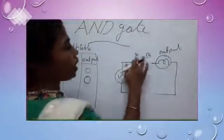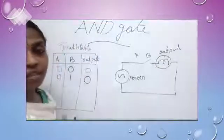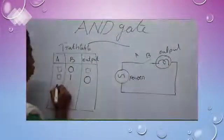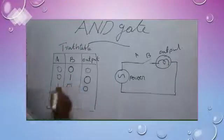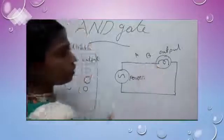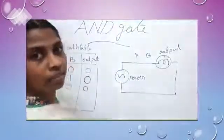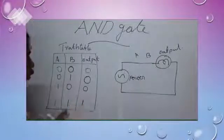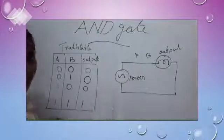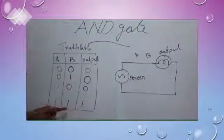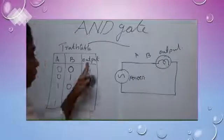Next, suppose switch A is on and B is off. In this case, is there any closed circuit? No! The value of A is one and B is zero — there is no closed circuit, so the output is zero. Next, suppose both A and B are on. Is there any closed circuit? Yes! There is a closed circuit, so the output is one. Both A and B is one because both the switches are on. In the case of AND gate, if all the inputs are one, the output is one. Other case, it will be zero.